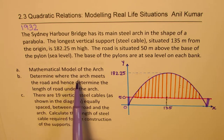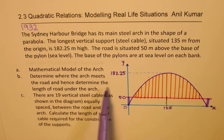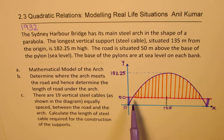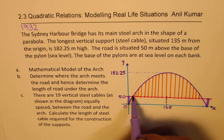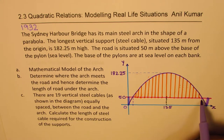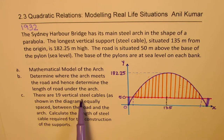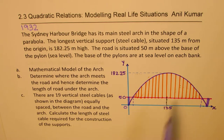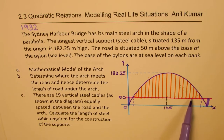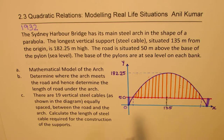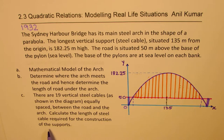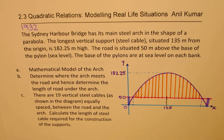Part B: determine where the arch meets the road, and hence determine the length of the road under the arch — we need to find the length of the road at those intersection points. Part C: there are 19 vertical steel cables, equally spaced. Calculate the combined length of steel cable required for construction.